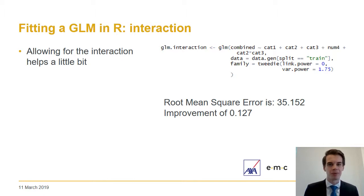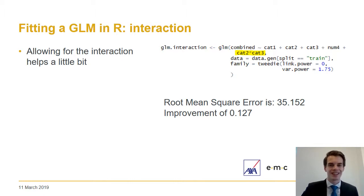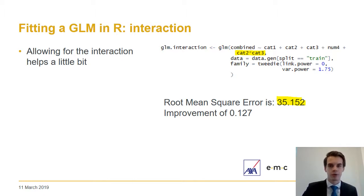In the next step we add in the interaction between cat2 and cat3, because that's how we designed the data. However, in real life it may not be easy to know exactly where interactions lie — it can take quite a lot of work, particularly for new datasets. As hoped, adding the interaction has reduced the root mean squared error, but we're still not fully accounting for the numerical variable with its non-linear response curve.